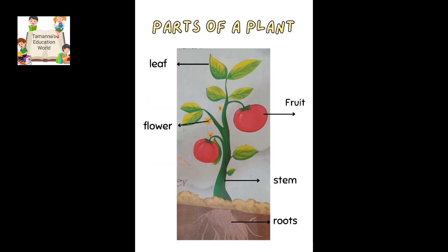We all have different body parts — you know that? Same way, plants also have different parts. Plants have five parts. What are they? First is leaf. You can see on the screen: leaf, flower, fruit, stem, and roots. So these are the parts of a plant.